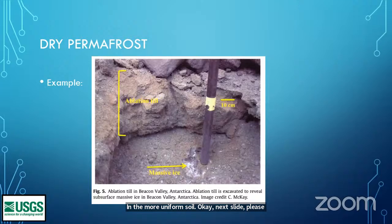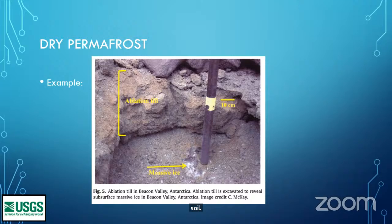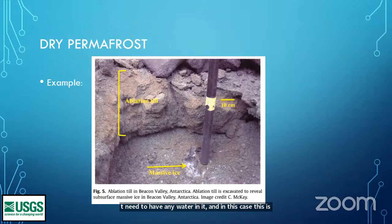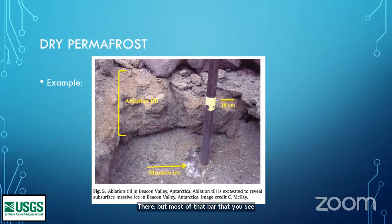Here is an example of dry permafrost. Dry permafrost is soil that's been frozen year round but does not need to have any water in it. This is from the Antarctic dry valleys — there really isn't any water in the permafrost part of this column. There's probably a little active layer up at the top, but most of that ablation till is the dry permafrost. You get down to some depth where you hit massive ice — and so there's your ice table.